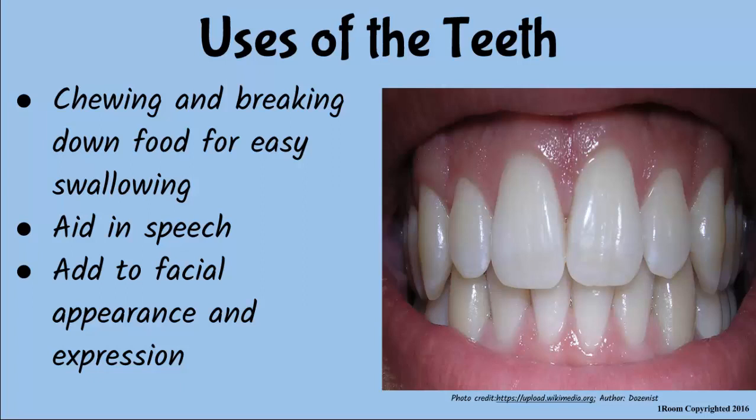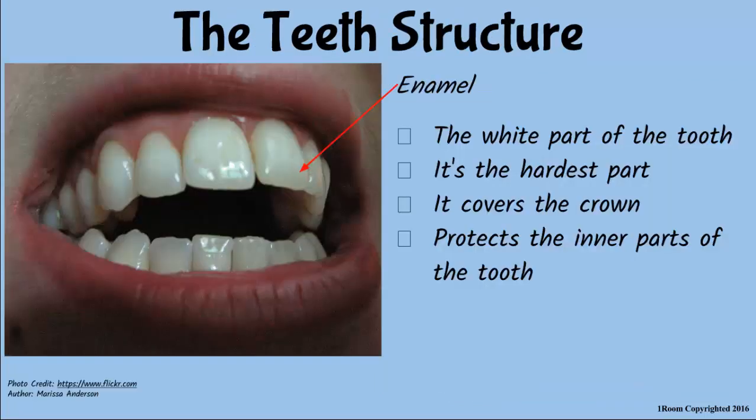A tooth has five parts: enamel, dentine, pulp cavity, cementum, and the root. Show me your teeth, ma'am. We can use the mirror to see what you are explaining. Now, you see the white outer cover is the enamel. It is very hard and protects the tooth from injury.